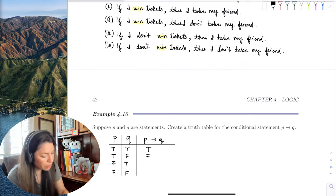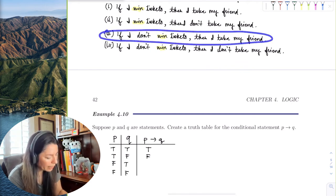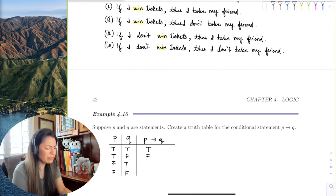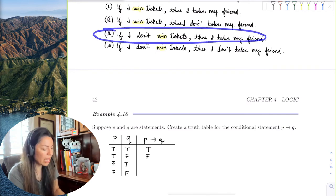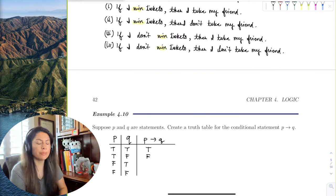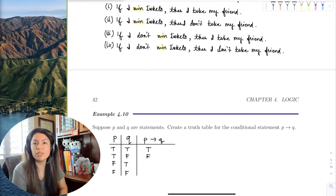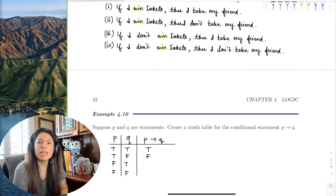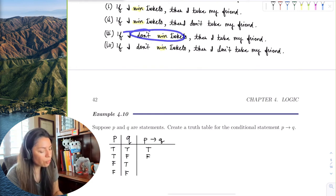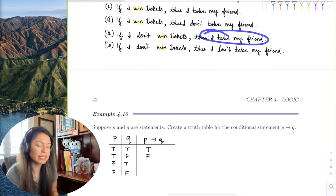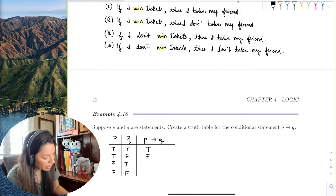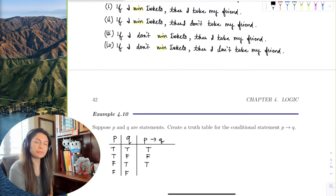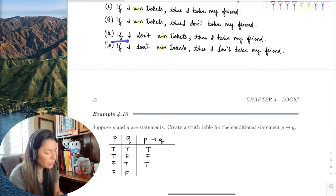Third row: I didn't win tickets but I went anyway. That's true — maybe my friend bought tickets, or someone gave them to me. There are many ways to get tickets without winning. Fourth row: I didn't win and I didn't go. No harm done; we went out to dinner instead. That's also true.